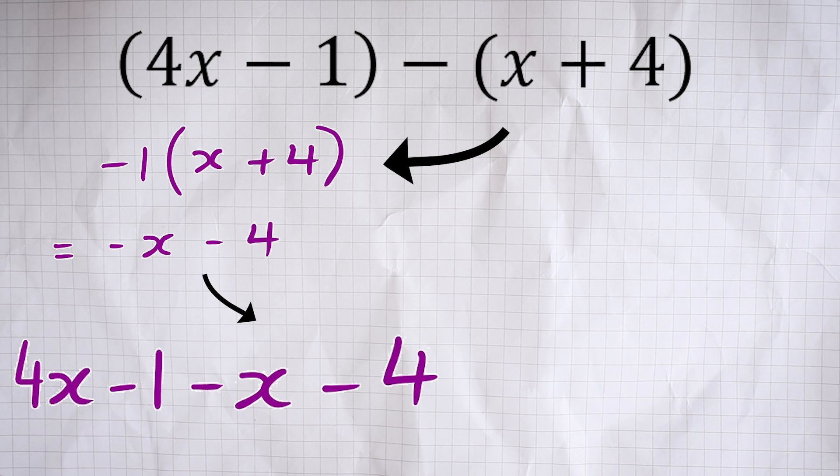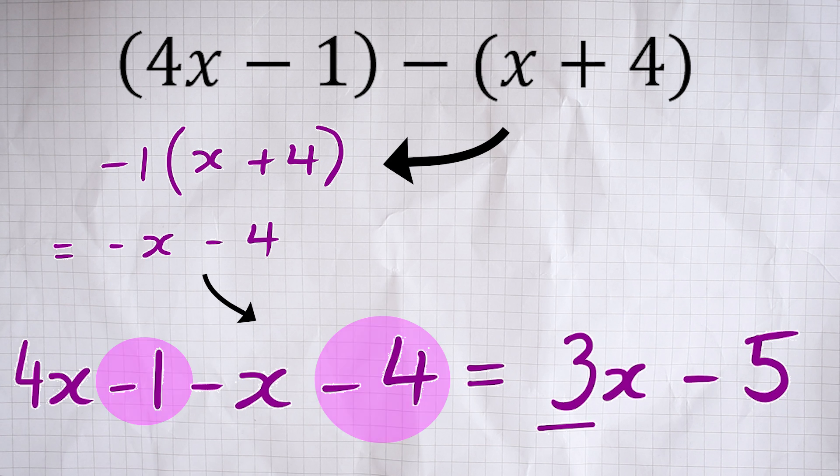And if we put the x's together, the 4x take away the x, we've got 3x. And if we take away the 4 from that negative 1, we get negative 5. So you should end up with 3x minus 5.